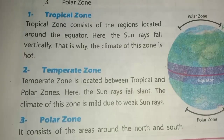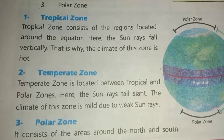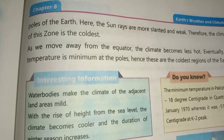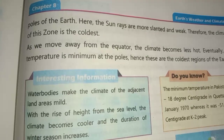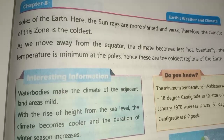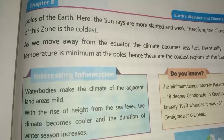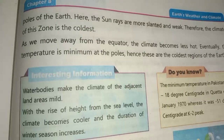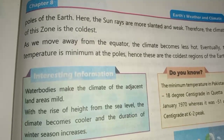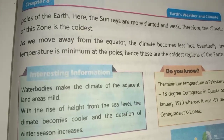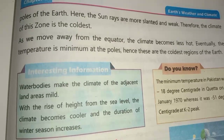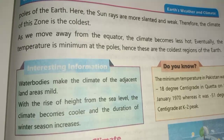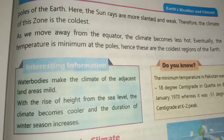The third one: what is polar zone? Polar zone consists of the areas around the north and south poles of the earth. Here the sun rays are more slanted and weak, therefore the climate of this zone is the coldest.